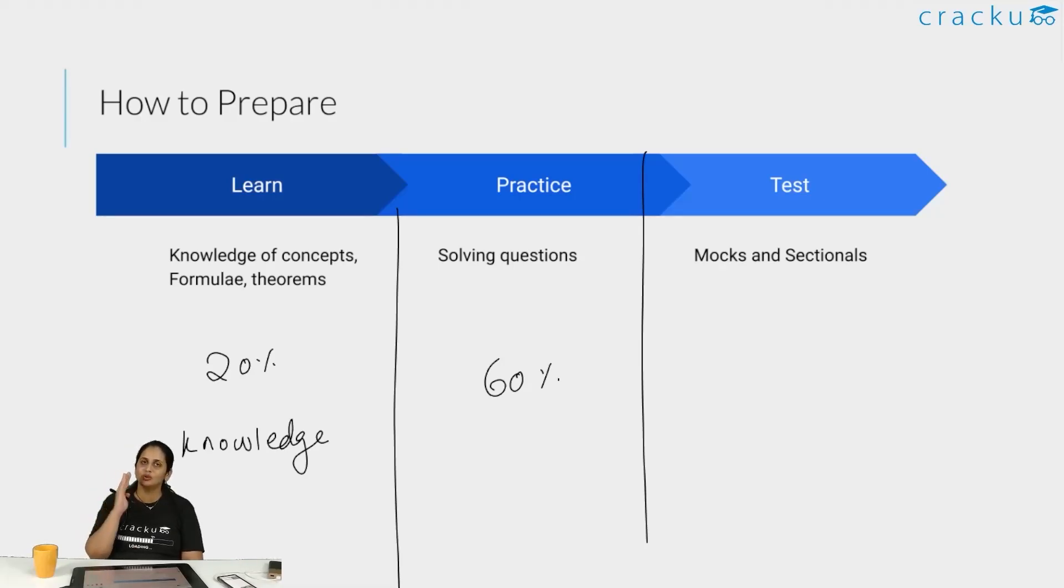If you really want to get to 70 percentile, just learning the concepts would be enough. If you want to get to 90 percentile, practicing a few questions - 100 questions, 200 questions - would be important. If you want to get to 99 percentile, thousands of questions will be needed.